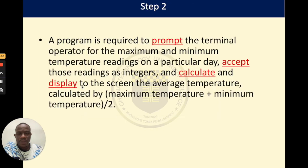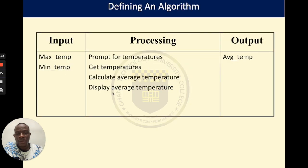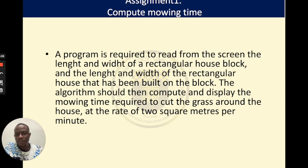In this case, we identify the processing steps by underlining the verbs within the problem: we've been asked to prompt, accept, calculate, and then display. This is how our table is going to look, and this can be translated into our algorithm. Now, take a pause here and consider the problem on the screen — see if you can come up with your own summary table.